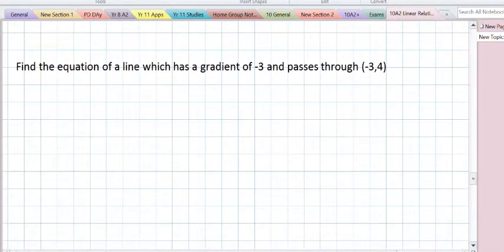Copying this one now. Find the equation of a line which has a gradient of minus 3 and passes through the point negative 3, 4. We see find the equation of the line, we think y equals mx plus c.